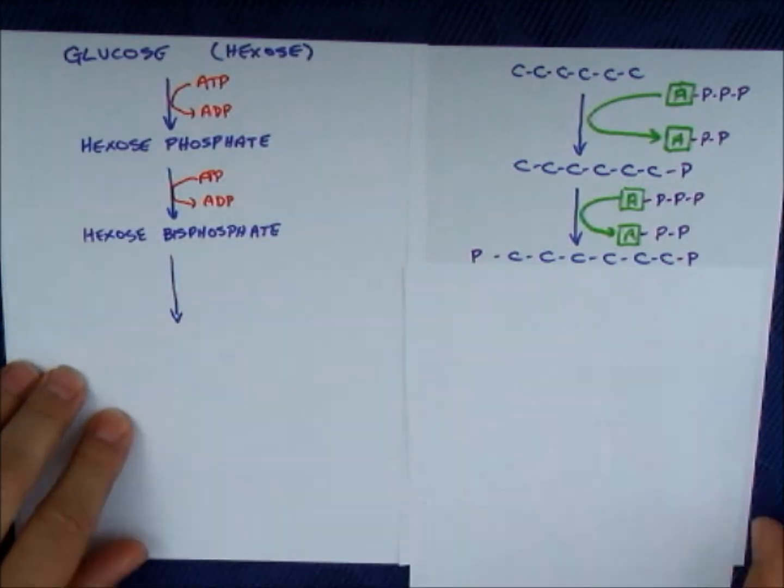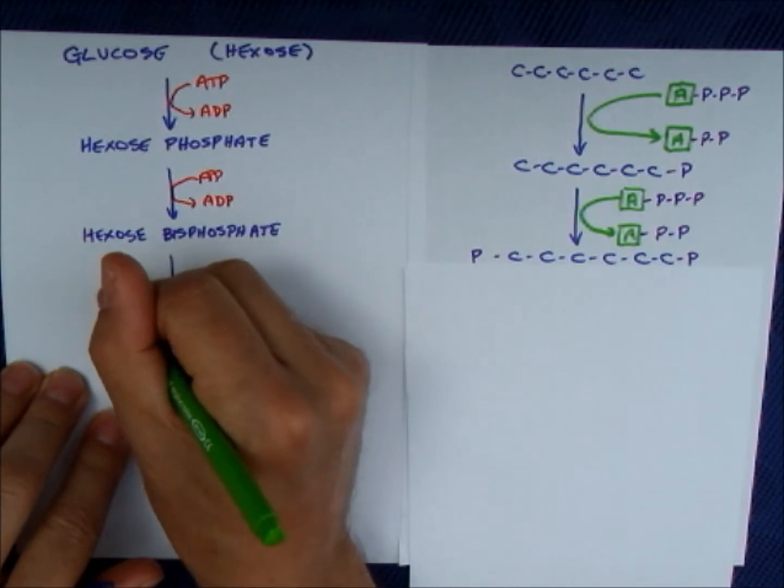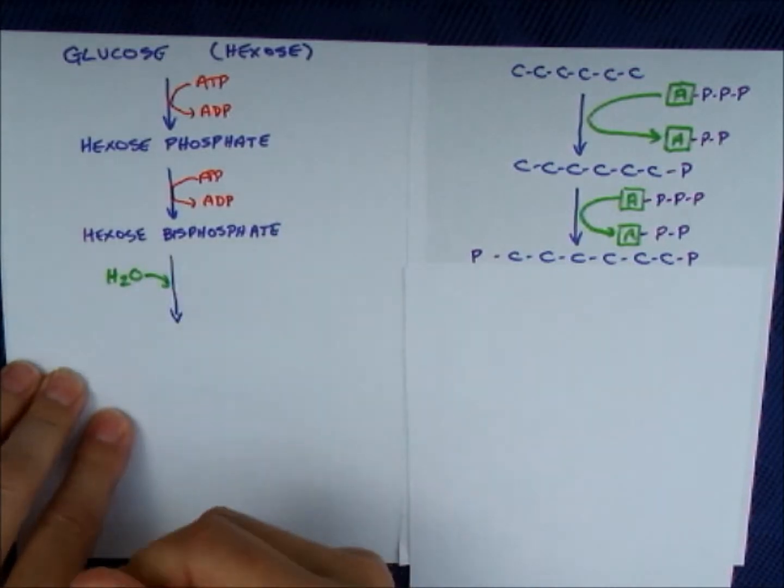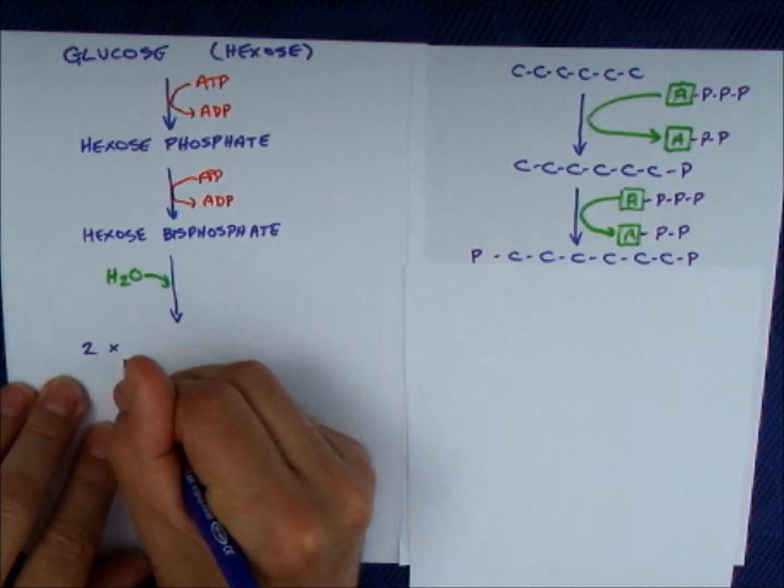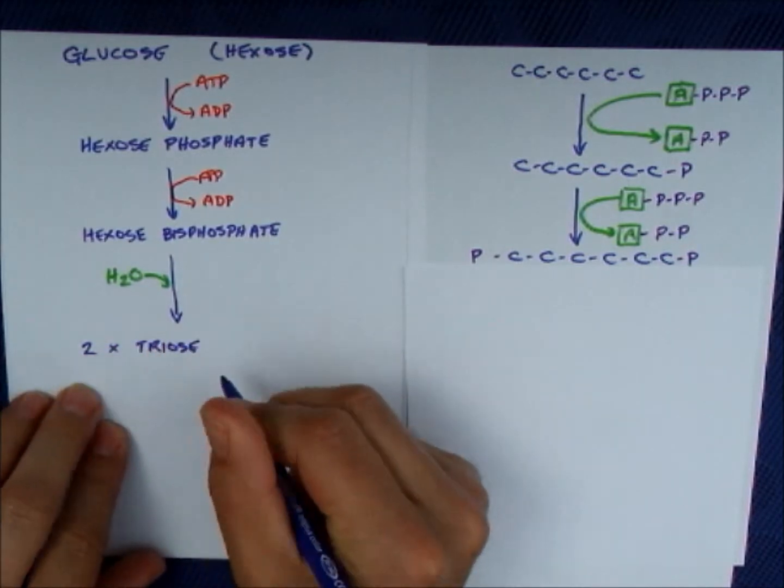There is then a hydrolysis step when the six carbons are split into two threes. We call them triose phosphate because they have three carbons each.